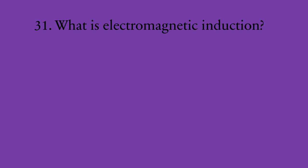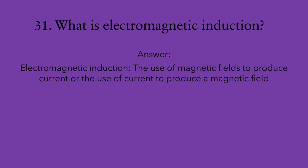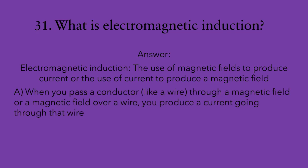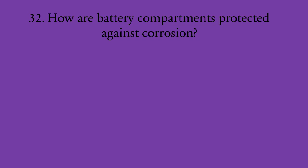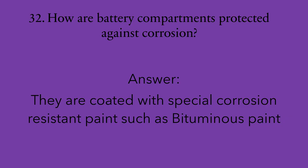Number thirty-one: what is electromagnetic induction? Electromagnetic induction is the use of magnetic fields to produce current, or the use of current to produce electromagnetic fields. It has two principles. One, when you pass a conductor like a wire through a magnetic field, you produce current going through that wire. Two, when you have current going through a wire, it produces a magnetic field around it. Number thirty-two: how are battery compartments protected against corrosion? They are usually coated with a special corrosion-resistant paint, such as bituminous paint.